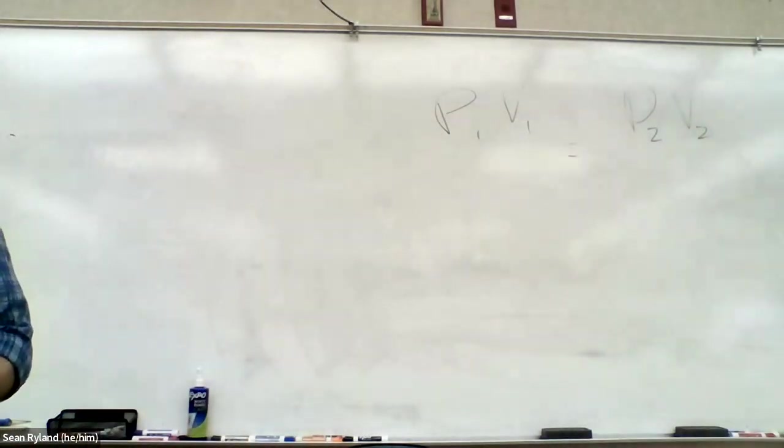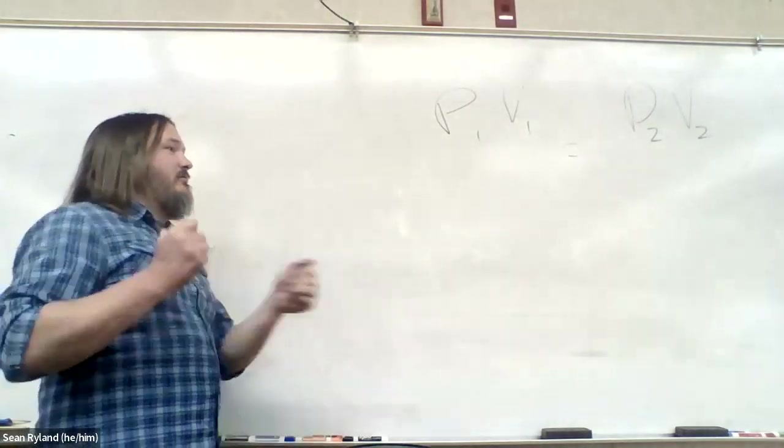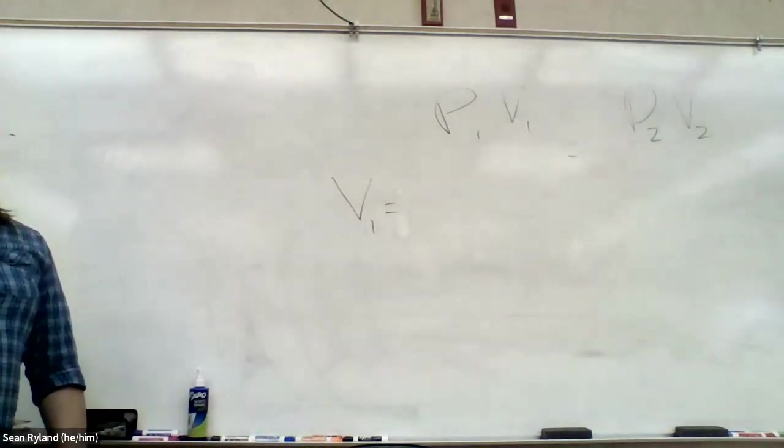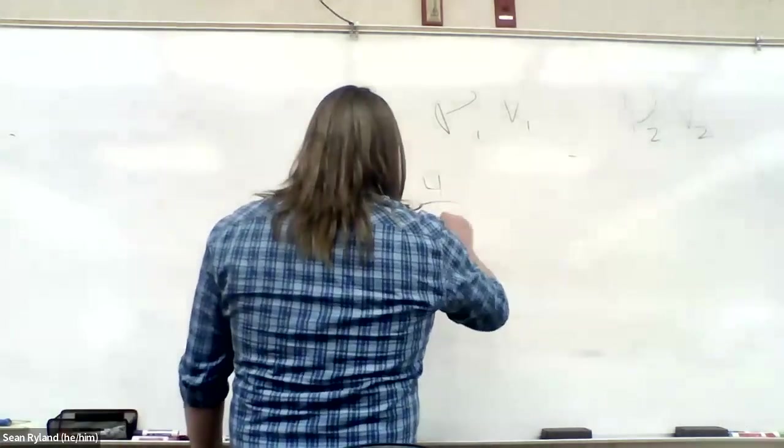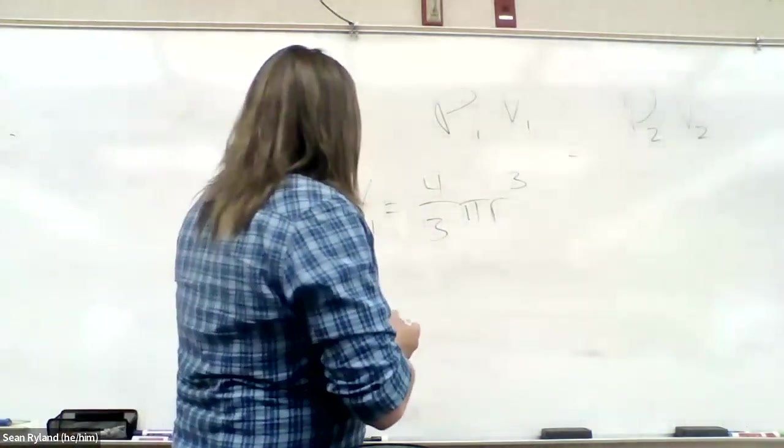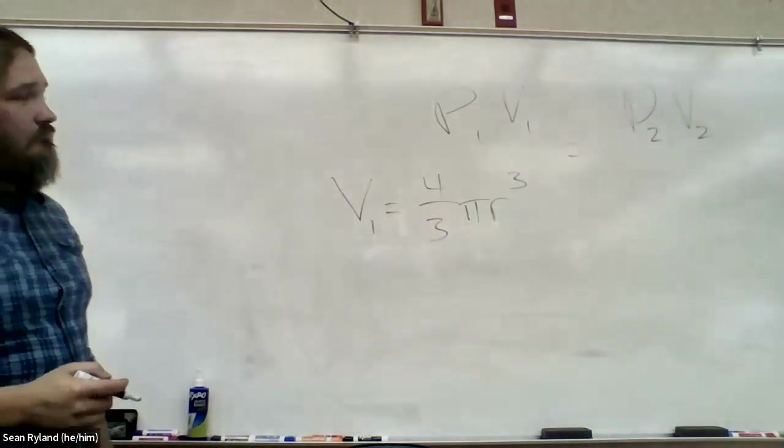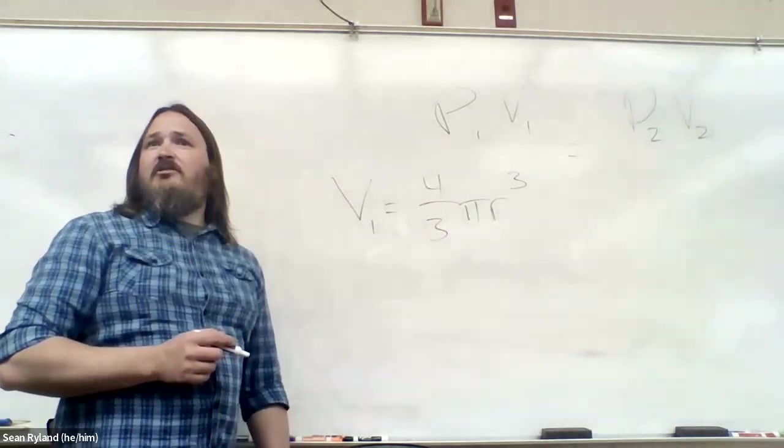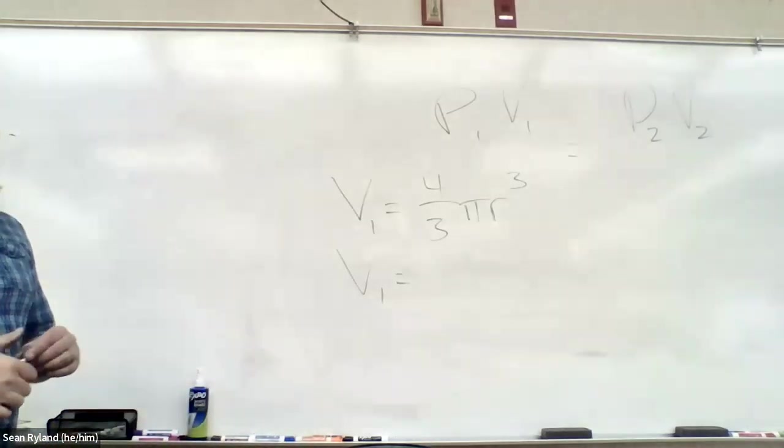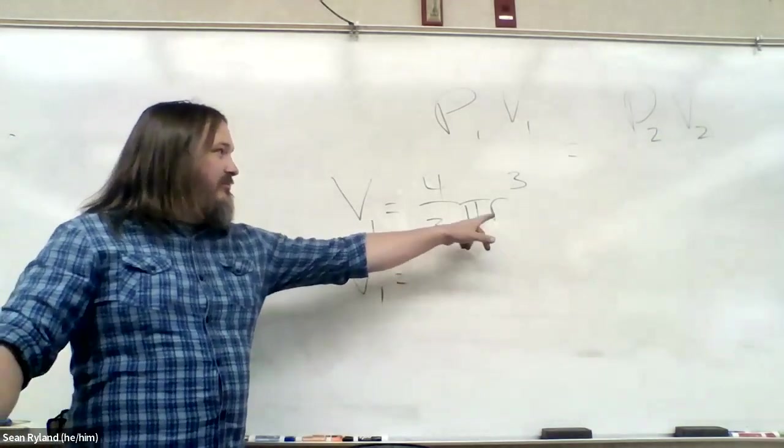So P1 V1 equals P2 V2. We know our initial pressure. If we have an initial volume, we have a final pressure, we can get final volume. So we just have to do a little geometry. If we assume that the bubble is spherical, then what do we do? How do we figure out volume one? Yeah, what is the equation for volume of a sphere? Something with 4 thirds pi r cubed. So 2.5 cubed times pi times 4 thirds gets something like 48 cubic centimeters-ish.